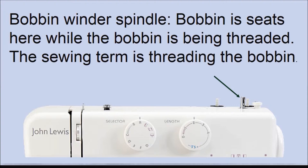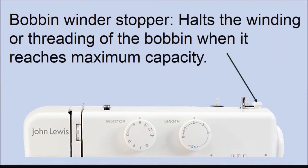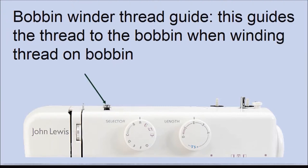This is where the bobbin is placed in order to wind thread around the bobbin. The bobbin winder stopper — this is a stopper on your machine that stops the bobbin winding more thread when the bobbin has reached its maximum capacity. The bobbin winder thread guide is a tiny peg on your machine that guides the thread while you're winding the bobbin.